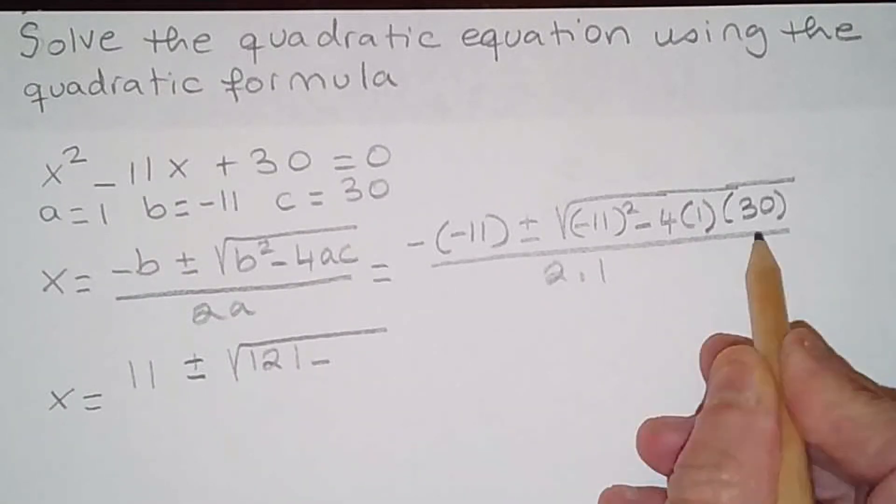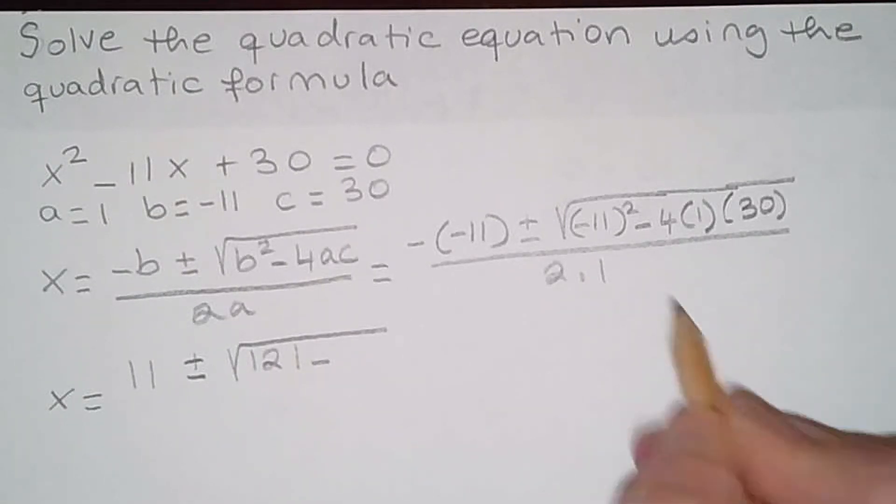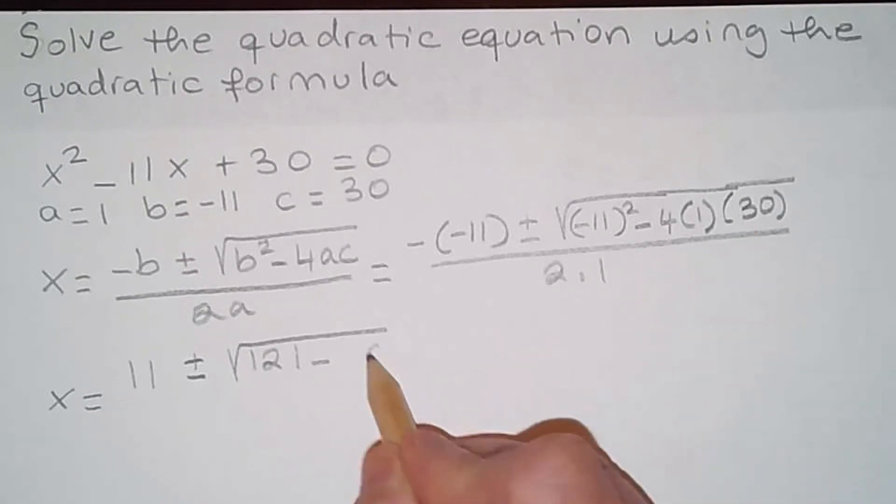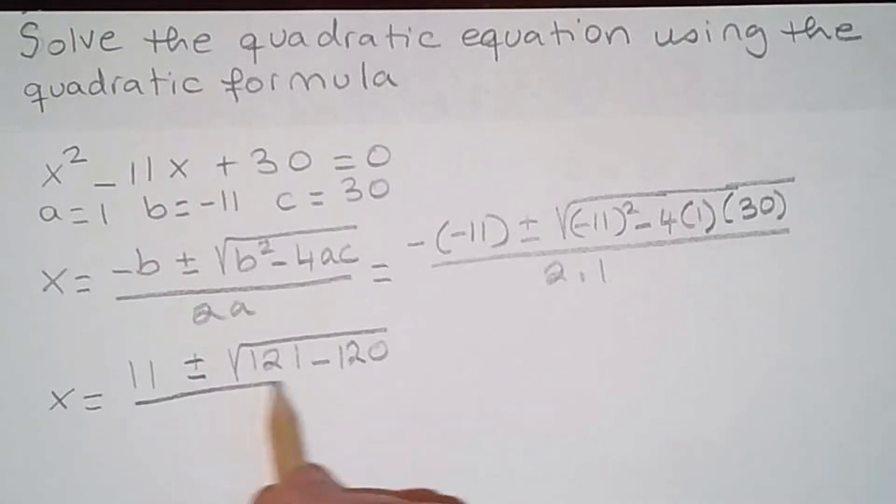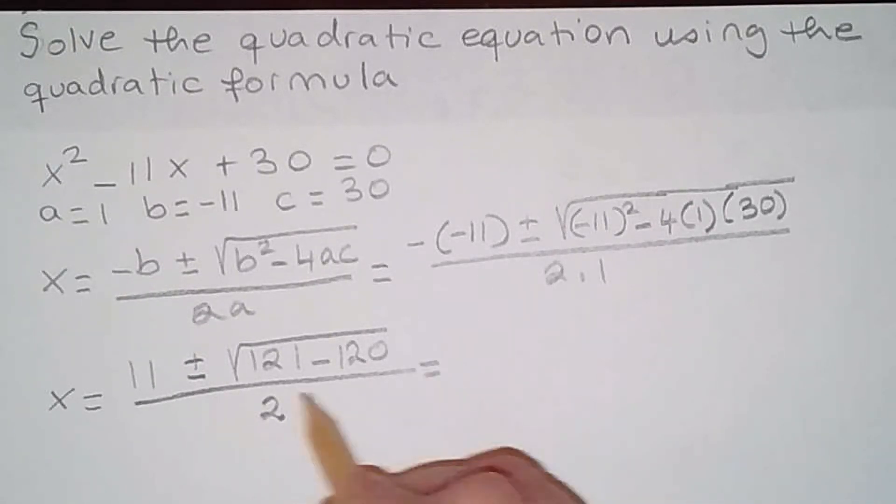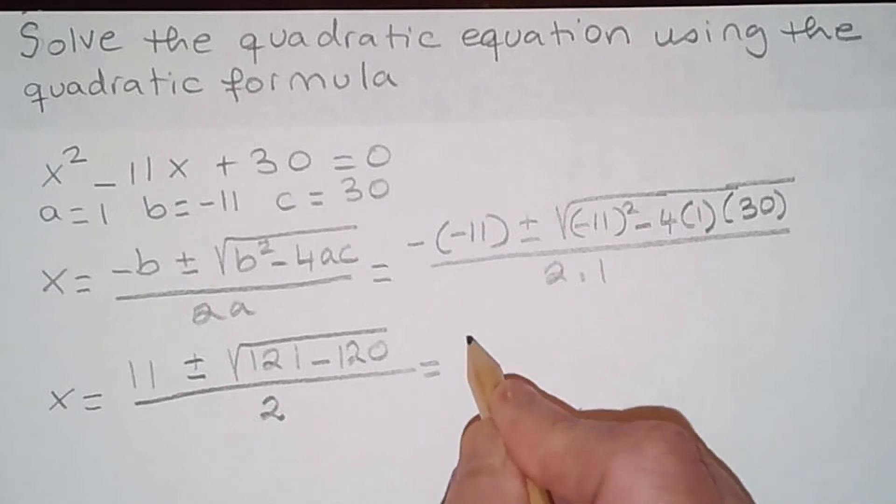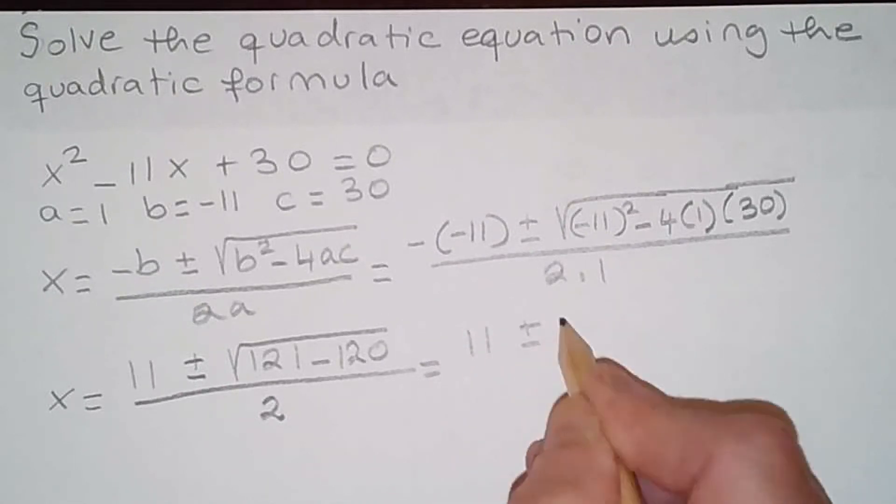...minus 4 times 30, so 4 times 3 is 12, it's 120, and that is divided by 2 times 1 which is equal to 2. So if we subtract 120 from 121 we're gonna get 1.